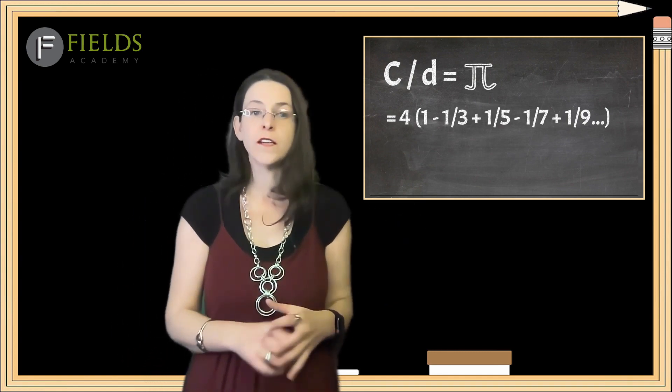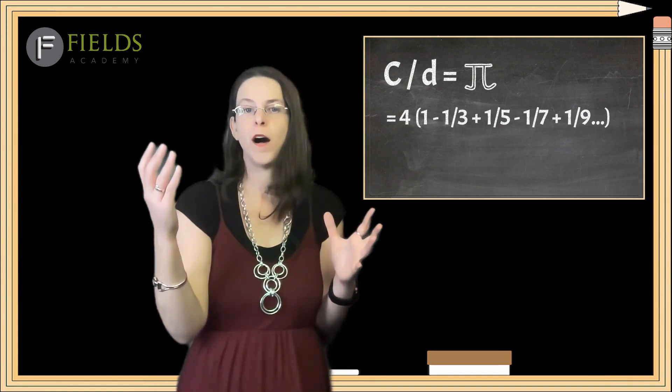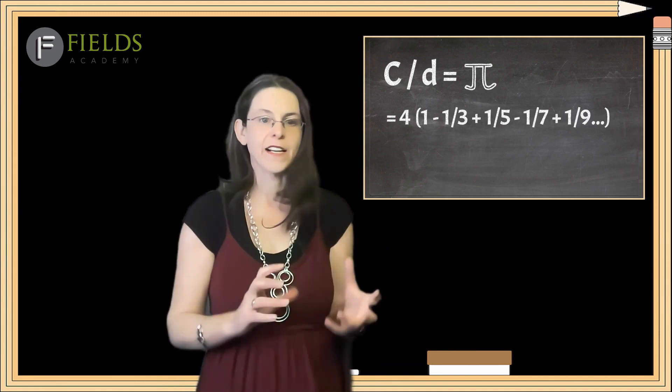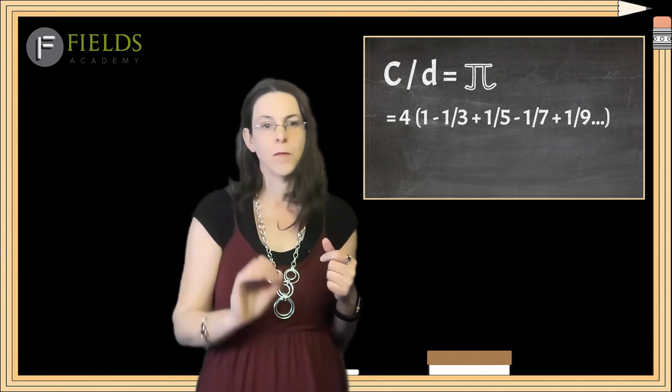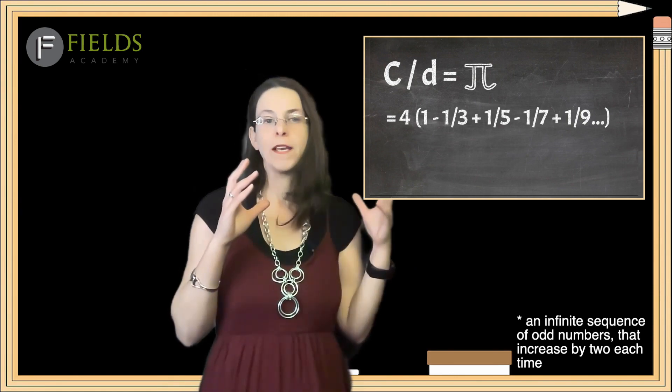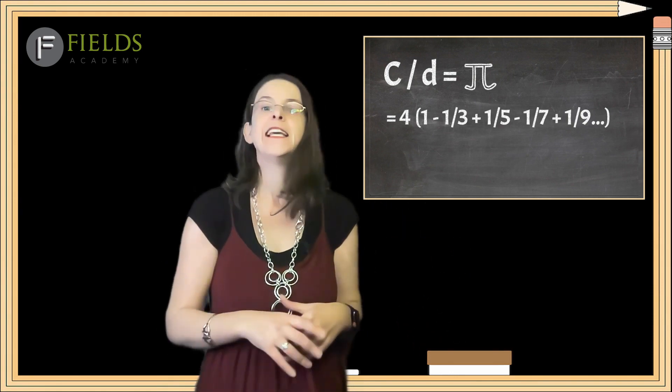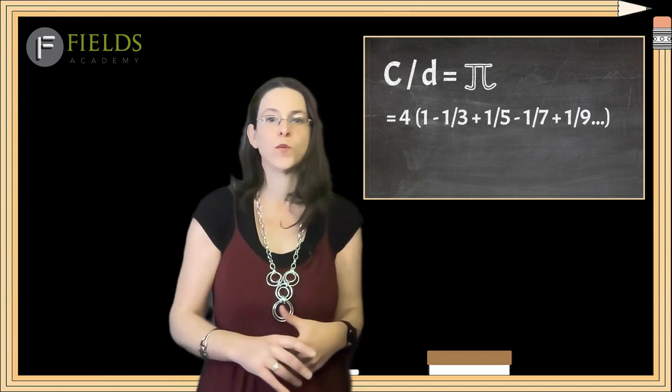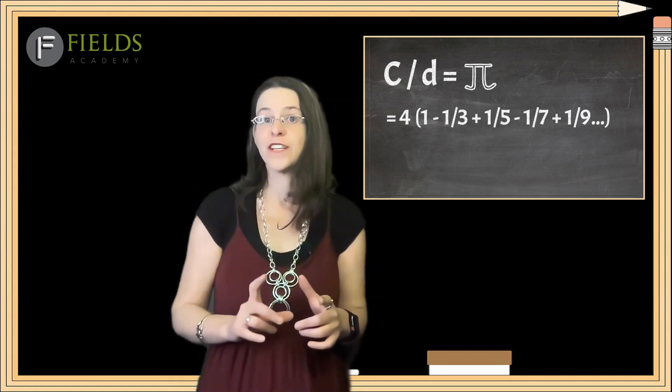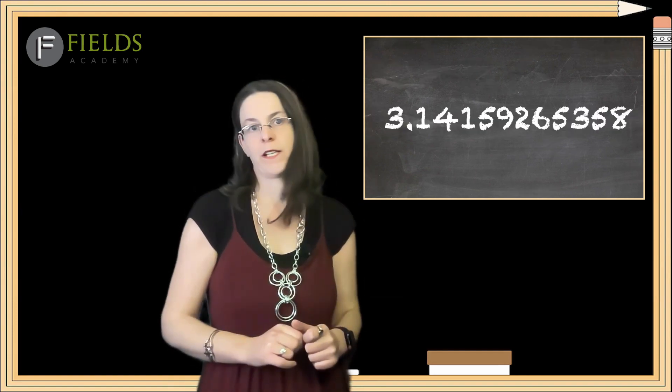He started at four, a number above pi, and then added and subtracted fractions where the denominators were odd numbers. Going above and below, adding and subtracting, he was able to calculate pi to a much, much closer value, accurate to 11 decimal places.